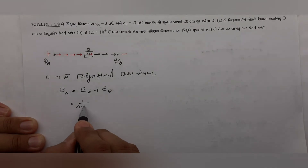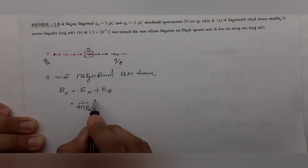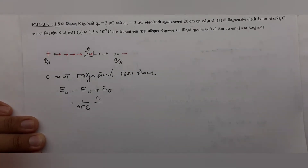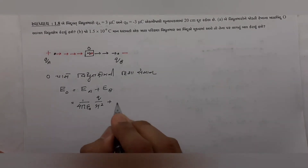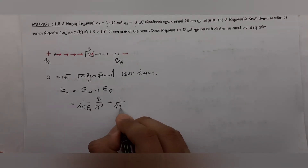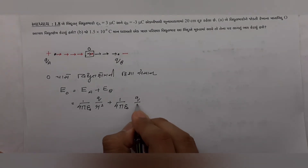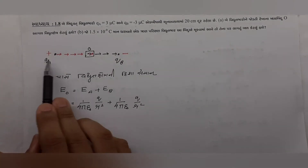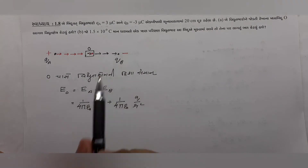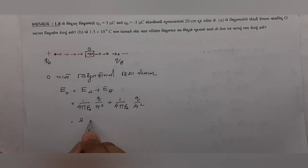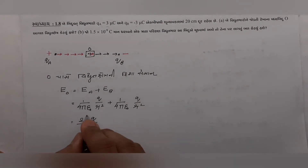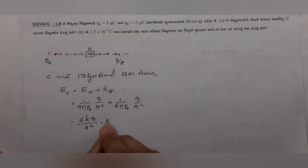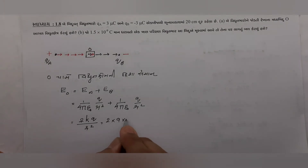Plus વિજભારનું ક્ષેત્ર હંમેશા બહાર તરફ હોય, minus વિજભારનું ક્ષેત્ર અંદર તરફ હોય — તેથી મધ્ય બિંદુ O આગળ બંને ક્ષેત્રોની દિશા સમાન બને છે. Eo = 2 × (1 / 4πε₀) × q / r². બંને વિજભારો સમાન મૂળ્યના છે, તો k × q / r² — k લઈએ.